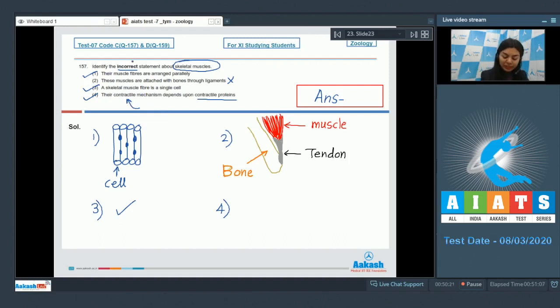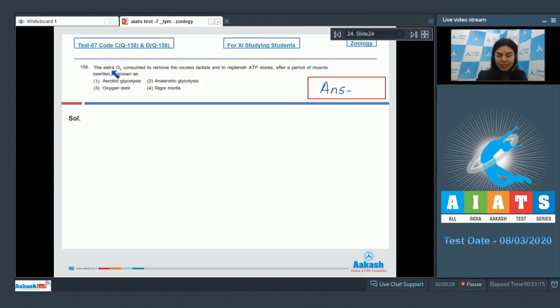Yes, the contractile proteins present in these muscle fibers provide them with the property of contractility. So this is a true statement. Only incorrect statement is option two. That is our answer. Question 158: The extra oxygen or O2 consumed to remove the excess lactate and to replenish ATP stores after a period of muscle exertion is known as aerobic glycolysis, anaerobic glycolysis, oxygen debt, or rigor mortis.